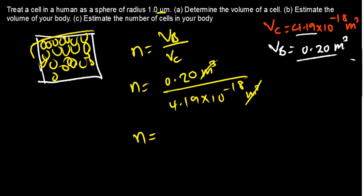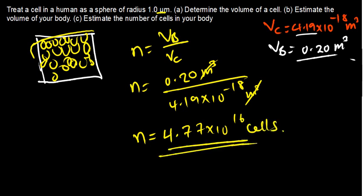Computing 0.20 divided by 4.19 × 10⁻¹⁸, this gives 4.77 × 10¹⁶ cells. So the estimated number of cells in the human body is 4.77 × 10¹⁶ cells.